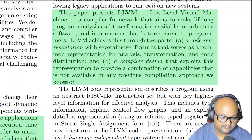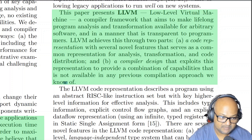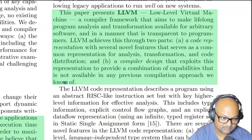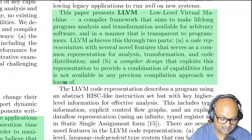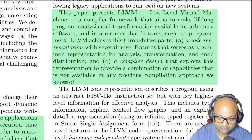LLVM stands for low-level virtual machine, and its goal was to build a compiler framework that does program analysis, transformation, and optimization throughout the lifetime of a program — including compiling it, linking it, and even running it. The entire architecture of the system can be thought of in two broad parts: the code representation itself, the intermediate language (hence the term VM in the title), and the design of the entire compiler pipeline that works upon this intermediate representation, optimizing and transforming it. This paper describes the high-level architecture and design decisions that went into each of these two parts.